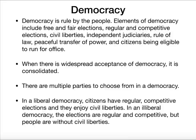Democracy is ruled by the people. Different elements of democracy include free and fair elections, regular and competitive elections, civil liberties, an independent judiciary, and rule of law. There should be a peaceful transfer of power and citizens are eligible to run for office. When there's widespread acceptance of democracy, then democracy is consolidated. You have to have multiple parties to choose from. In a liberal democracy, not only do you have free and fair elections, but you also have civil liberties. In an illiberal democracy, such as Russia, they do have regular elections and they're relatively competitive, but there are people who don't have civil liberties within the country.